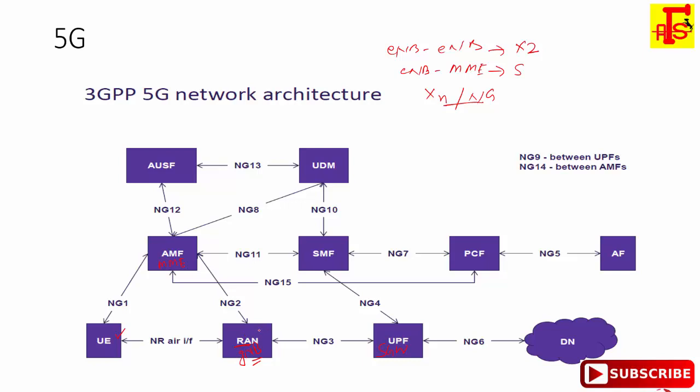Different names mean different protocols and implementations. You will find the details about all possible split options in 3GPP TS 38.801, where you can see all possible options. However, the most common and agreeable split line is the one shown here for gNodeB.